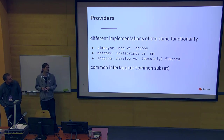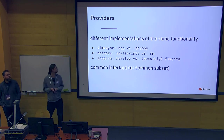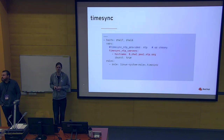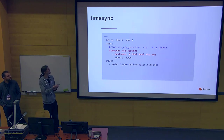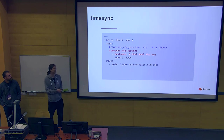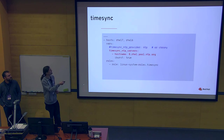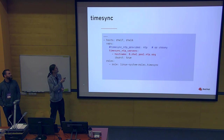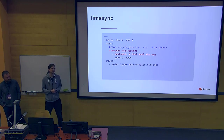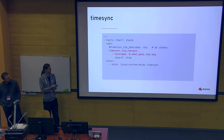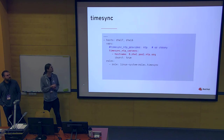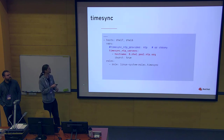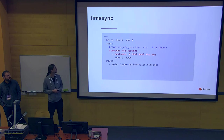The TimeSync role is a medium-complexity role. It accepts a 'timesync_ntp_provider' variable which can be set to NTPD or Chrony, and the rest of the configuration is the same for both. If you don't specify this variable, it chooses an appropriate default for the given system — respecting any running time-sync service. For RHEL 6 the default would be NTPD, but for newer versions of RHEL 6, RHEL 7, and RHEL 8 the default would be Chrony.